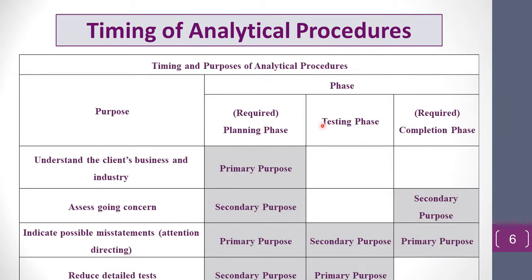We have four objectives for analytical procedures: understand the client's business and industry, assessment of going concern, indicate possible misstatements, and reduce detailed testing. Let's see when each objective is applied in each phase of the audit process — planning, testing, and completing.